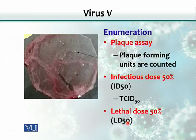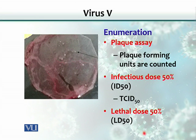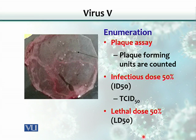Similarly, sometimes we are interested in how many virus particles are able to kill the animal. The procedure is exactly the same — tenfold serial dilutions are made, but instead of detecting viral presence, we observe how many animals get killed at each concentration or dilution of the virus. We then statistically calculate the lethal dose 50 (LD50), which is the dose or number of viruses able to kill 50% of that population of animals.